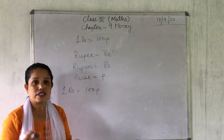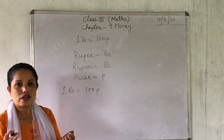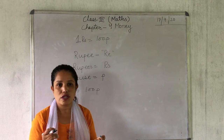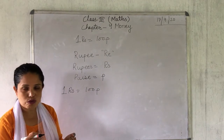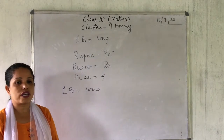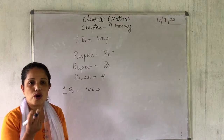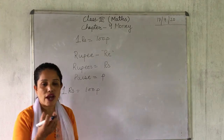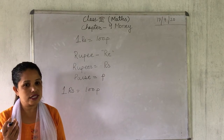You have seen the 10 rupees note, 20 rupees note, 50 rupees note, 100 rupees note, 200 rupees note, 500 rupees note, and 2,000 rupees note. I hope you have seen the coins also: 1 rupee coin, 2 rupees, 5 rupees, 10 rupees.